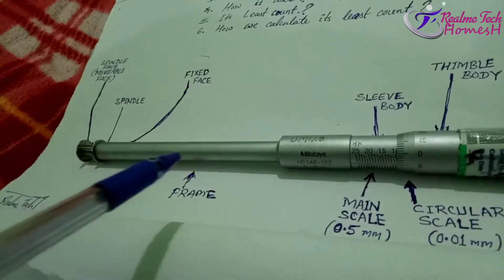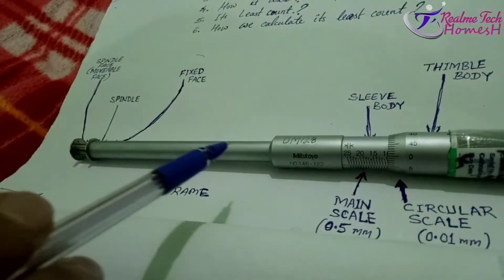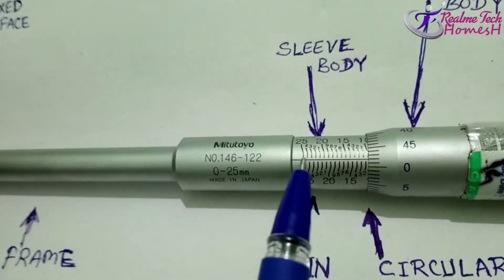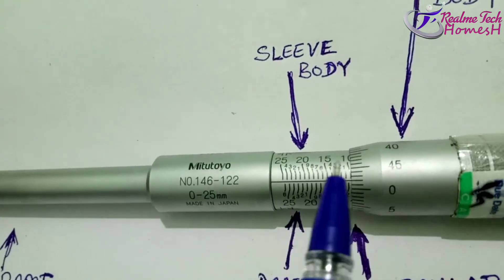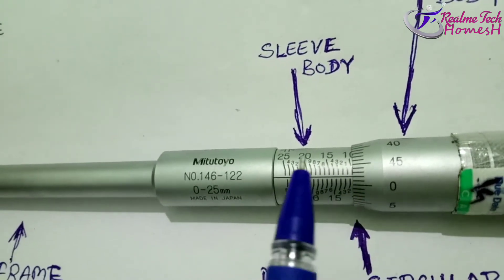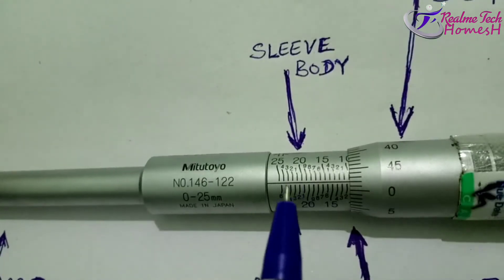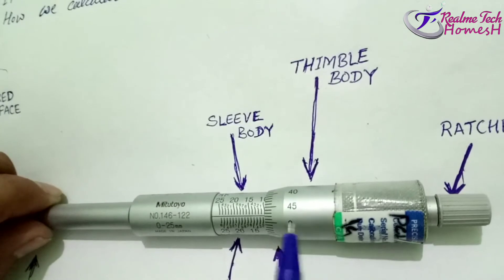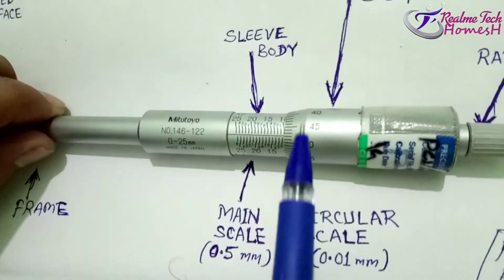You can see here the frame of the micrometer. This is the main scale, and one division on it is 0.5 mm. This body is called the sleeve body, and on it you will see the printed scale. This other body is the thimble body, on which you will see the circular scale.